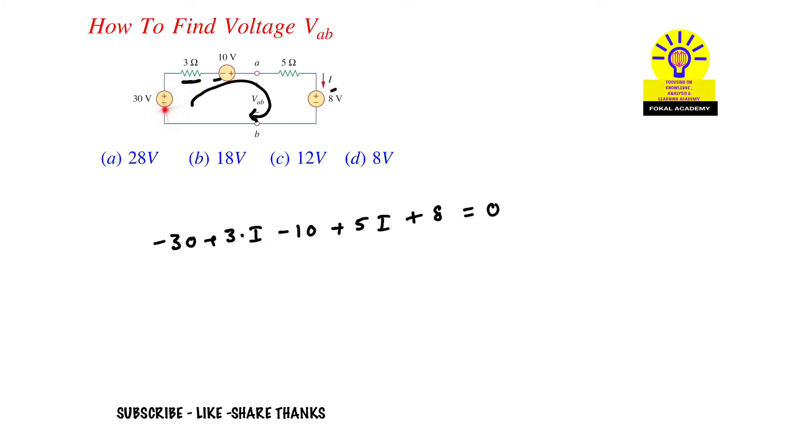So here current was entering from minus to plus, that's why I'm taking minus 30. And here minus to plus, that's why minus 10. And here plus to minus, that's why I take here plus 8.